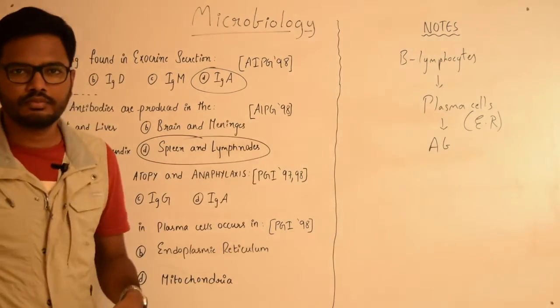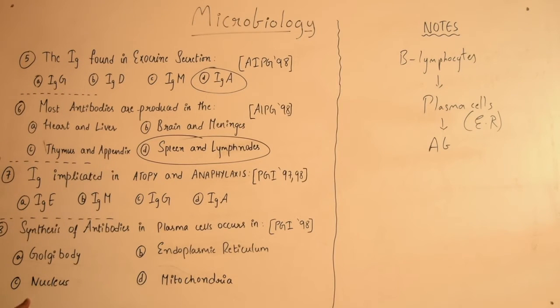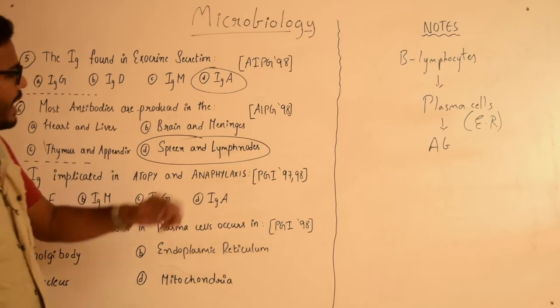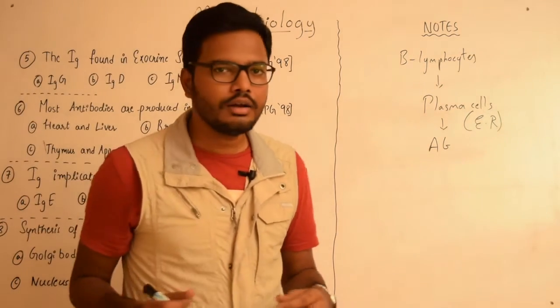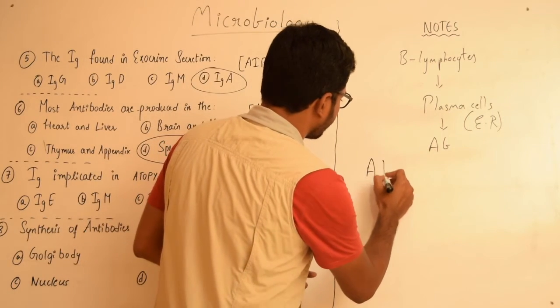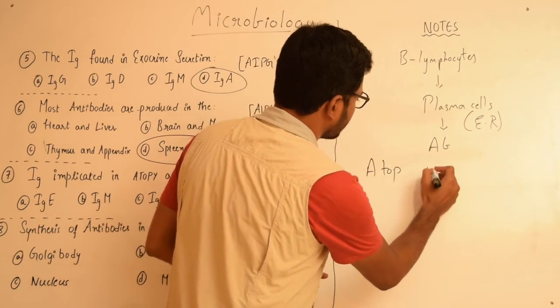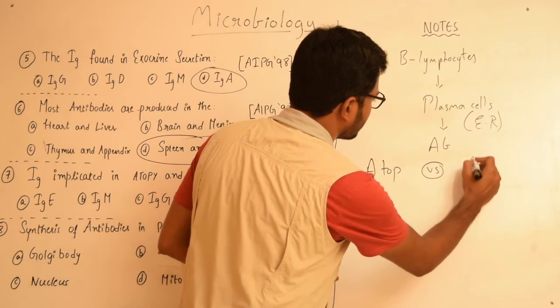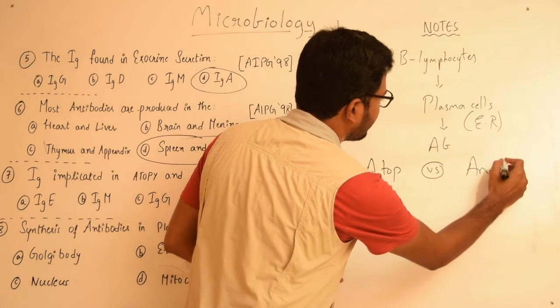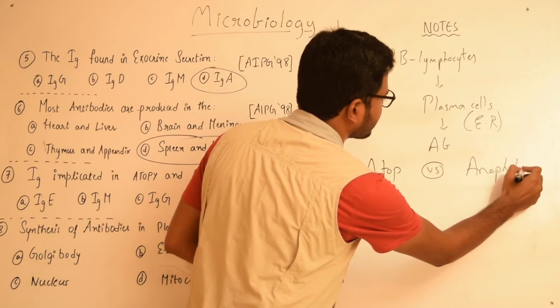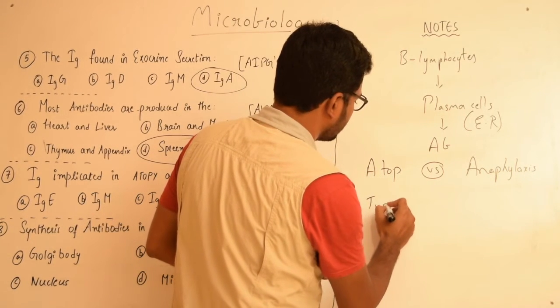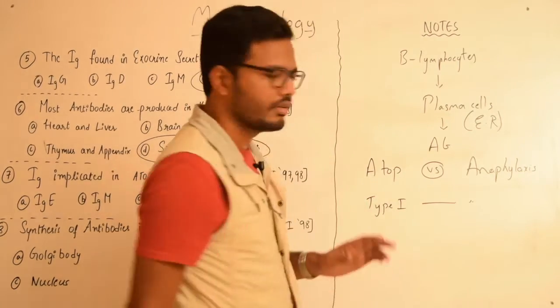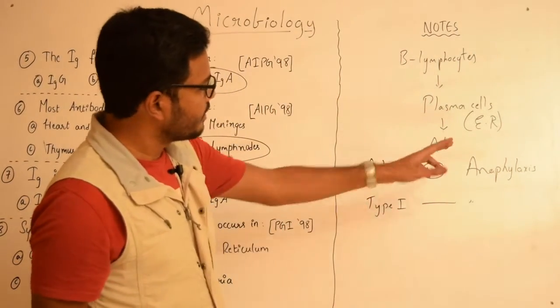Now moving on to the next question: immunoglobulin implicated in atopy and anaphylaxis? Both anaphylaxis and atopy are type 1 hypersensitivity reactions. So we have atopy and anaphylaxis—both of them come under type 1 hypersensitivity reaction.